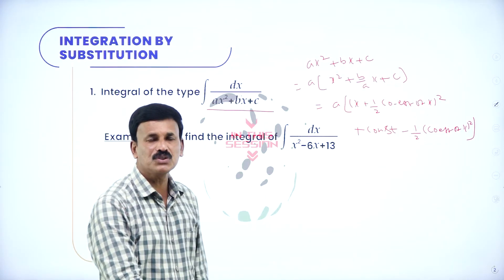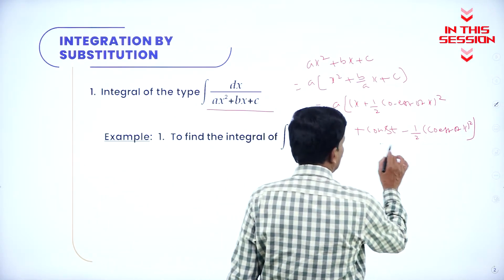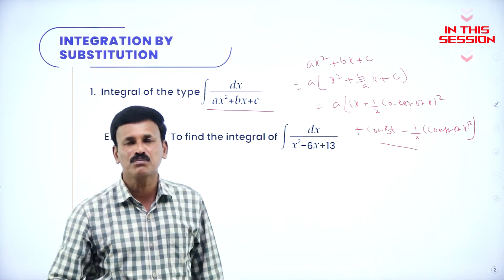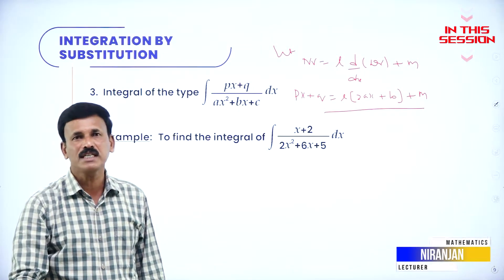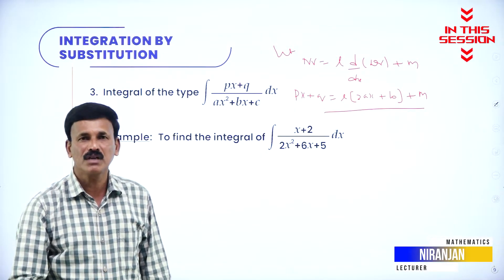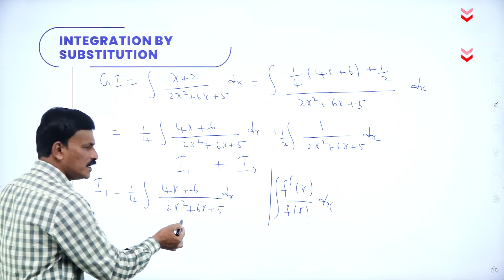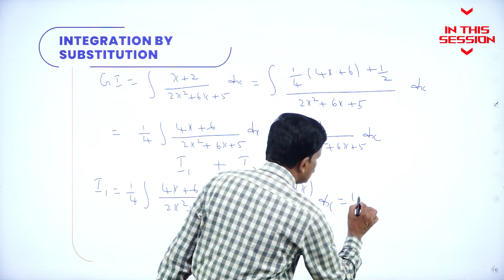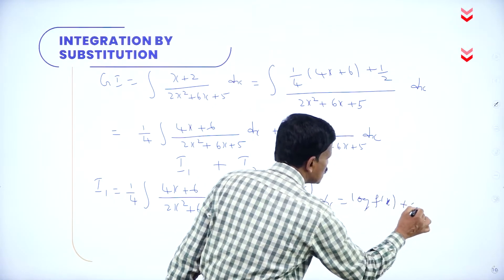Plus constant minus half into coefficient of x squared. Applying this formula, the given quadratic equation will reduce to some important integrals. By equating the coefficient of x and constant, you will get the value of l and m. Substitute and integrate it, you will get the answer. If the function is in the denominator and differentiation in the numerator, then this can be written as log of f(x) plus c.